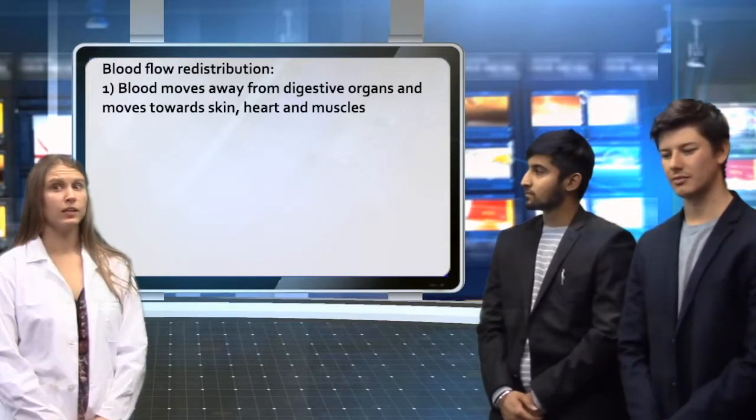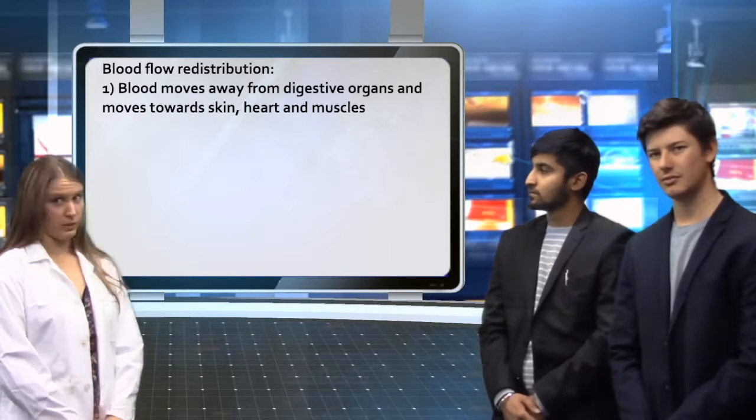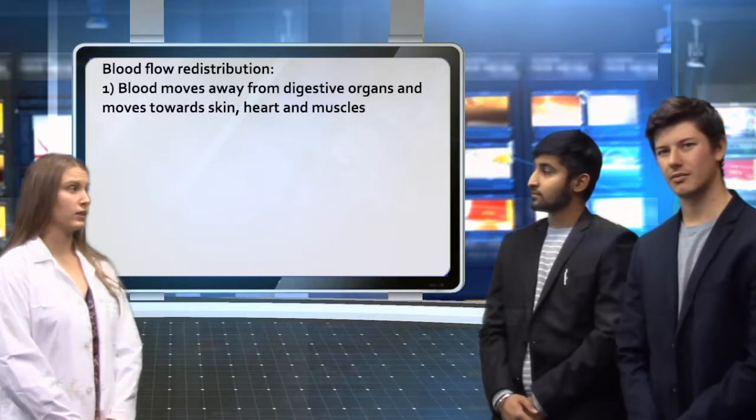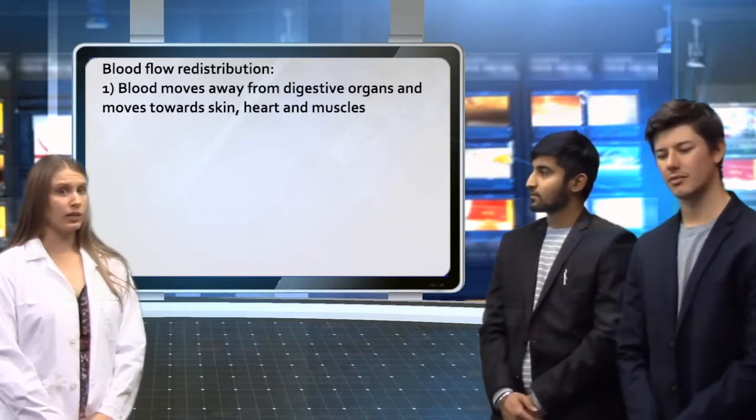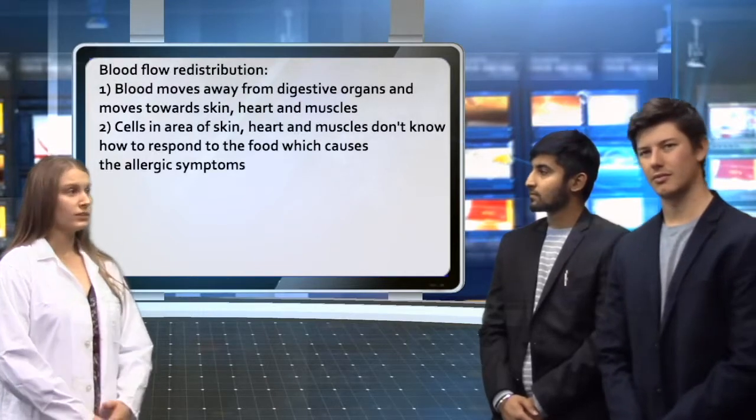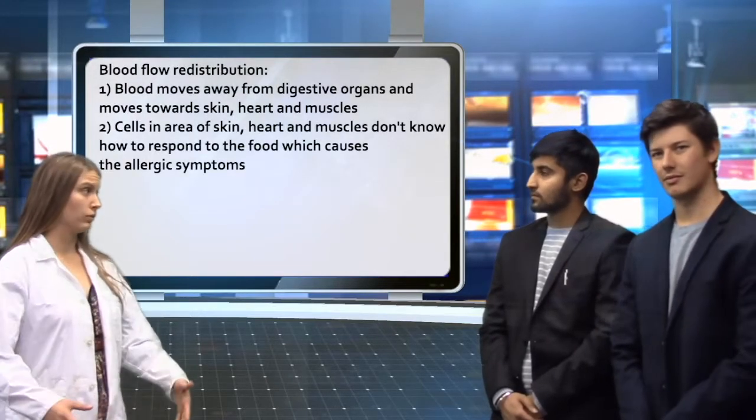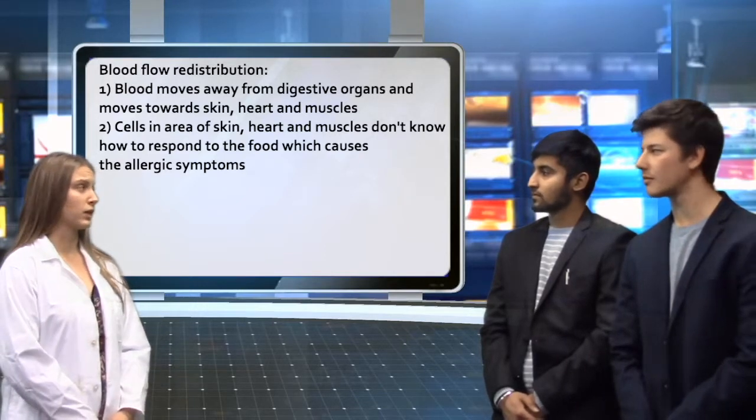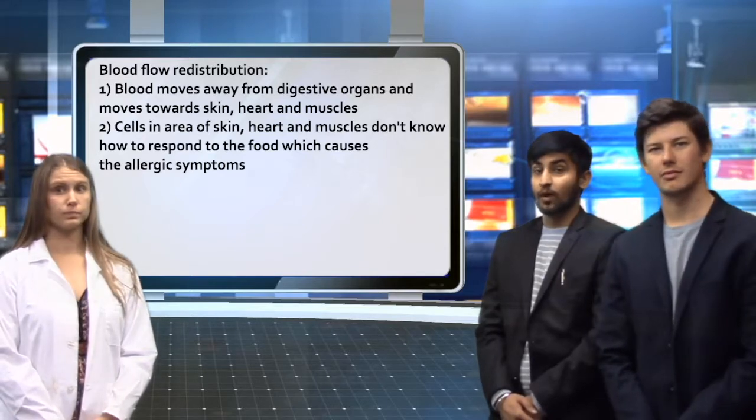Welcome back. Before the break, we were discussing what exactly causes the symptoms of FDEIA. Well, to be honest, we actually don't really know. One possible cause of FDEIA is due to blood flow redistribution in your body during exercise. So, during exercise, blood moves away from the kidneys, the liver, the stomach, and the intestine, and moves towards the skin, the heart, and your muscles. At rest, the food you absorb is tolerated well by the cells of the stomach and the intestines, but when you start exercising, and the food travels to your skin, your muscles, and your heart, the cells in this area don't know how to respond to all of these new products, and the allergic symptoms that we talked about before occur. Well, Doctor, I did not know that. What else can you tell us about this?